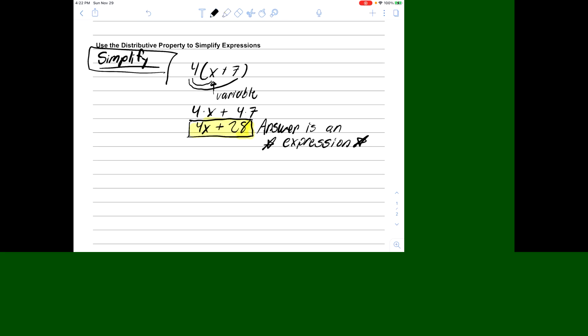Another thing that could happen is we could have subtraction. So it could be 3(y-5). Again, just like before, we'll distribute the 3 to the y and distribute the 3 to the 5. We have 3 times y and 3 times 5. It's a subtraction symbol that goes in between. The last step we can do is 3 times y, we can rewrite as 3y. And 3 times 5, we can solve and get 15. And then our subtraction sign goes there. And now we have our answer.